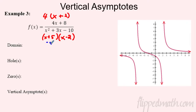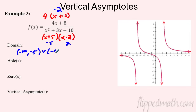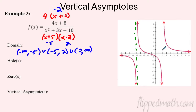Issues in the denominator are at x = -5 and x = 2. Does anything cancel? We have (x + 2) on top and (x - 2) on the bottom — those are not the same factor, so nothing cancels. Domain is from negative infinity to negative five, union negative five to two, union two to infinity. You can see the vertical asymptote at negative five and another at two. No holes here — holes only happen when something cancels.